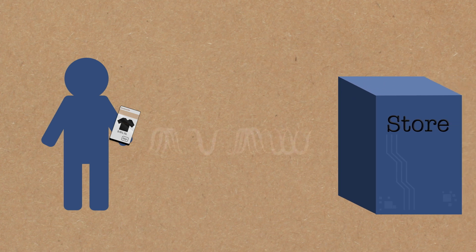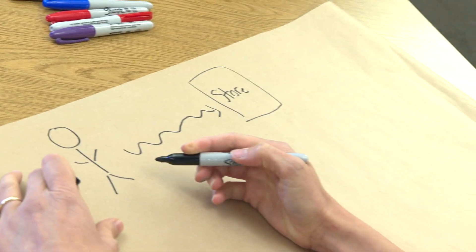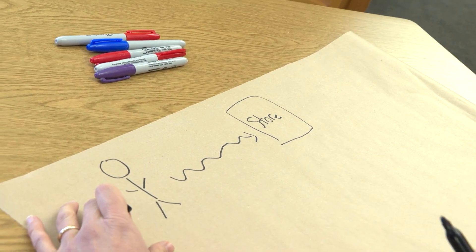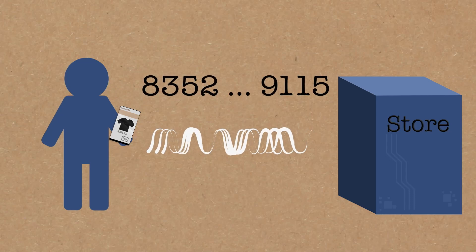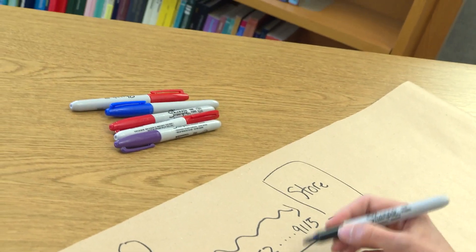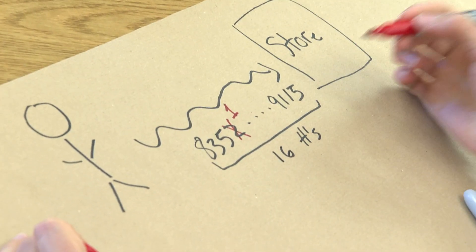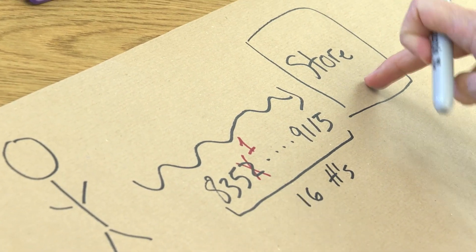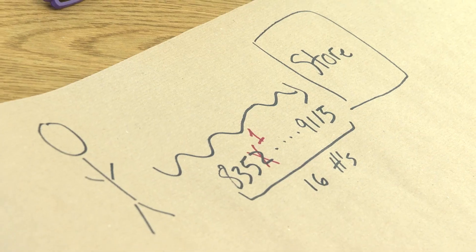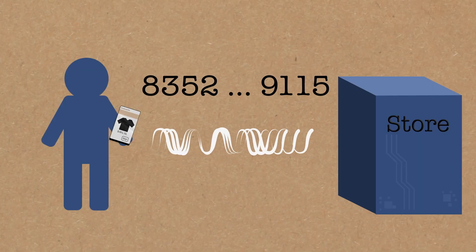You want to buy something on the internet. Here is you and here is this online store, and between you is this channel we all know and love called the internet — but the internet is a noisy channel. Say you want to buy something from this store; you might want to send the store 16 numbers — your credit card, like 8 3 5 2 ... 9 1 1 5. You really don't want the store to receive someone else's credit card number by mistake and charge you. So you want to build in redundancy so that if there's an error you can first figure out that there's an error and second of all maybe correct that error.